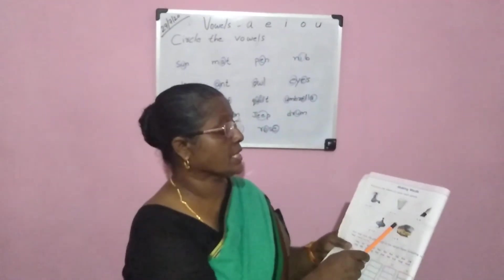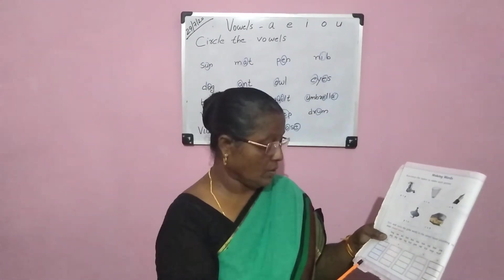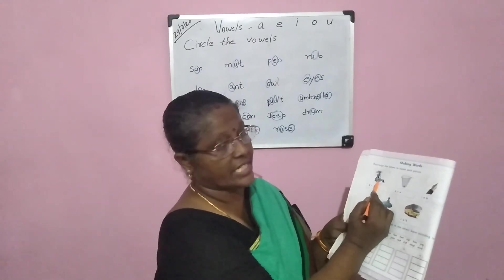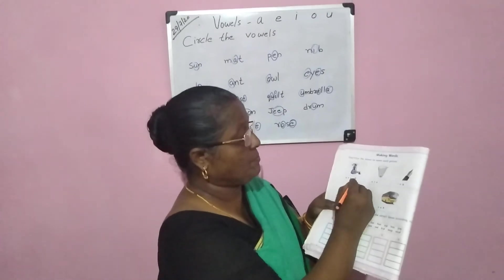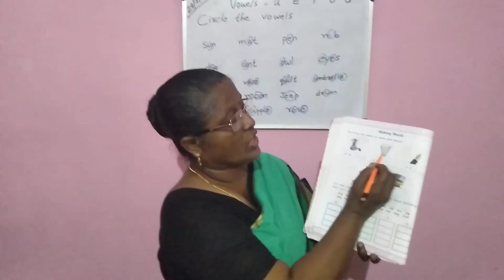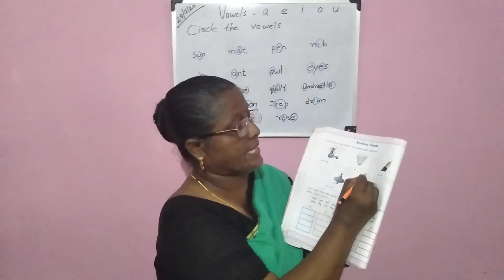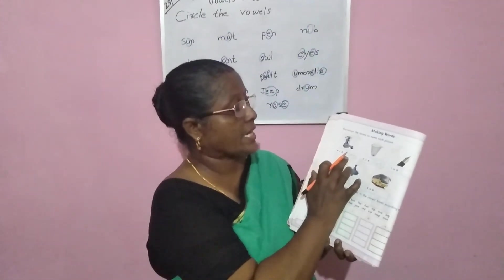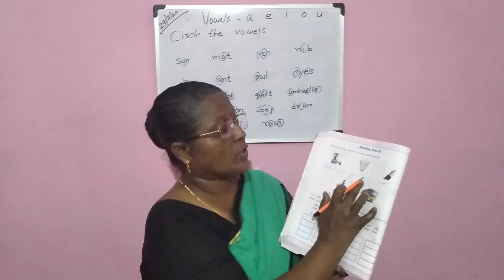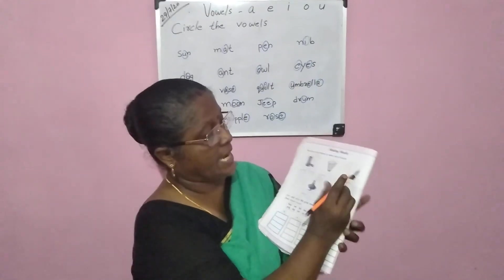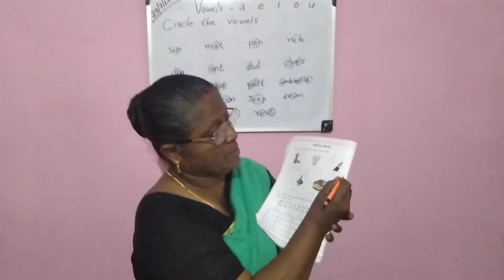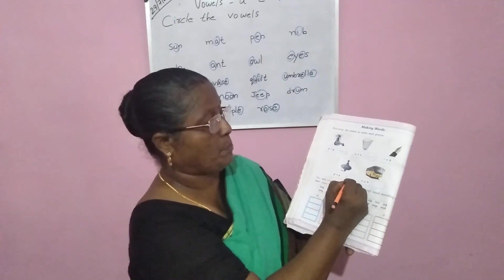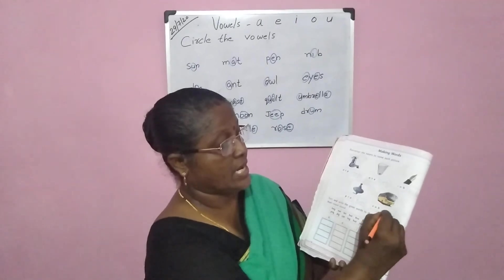Children, this is your classwork — write it two times in your classwork copy. Check your English letter word book, page number 46. Rearrange the letters to name each picture. A-T-P — what is this? This is a tap. Tap spelling: T-A-P. What is this? This is a net: N-E-T. You have been given the spelling scrambled — rearrange and write it. N-T-E rearranged is N-E-T. What is this? This is a nib: N-I-B. P-T-O — what is this? This is a top: T-O-P. What is this? This is a bus: B-U-S.